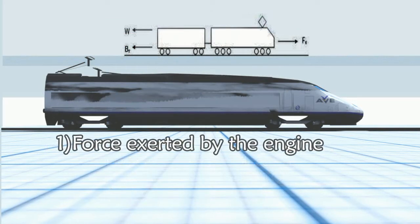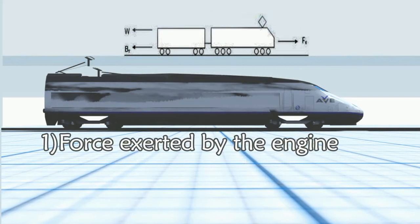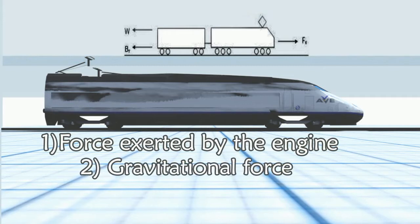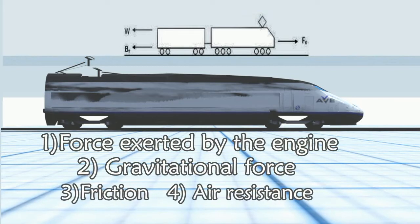The four main forces acting on a moving train are pulling force or force exerted by the engine, gravitational force, frictional force, and air resistance.